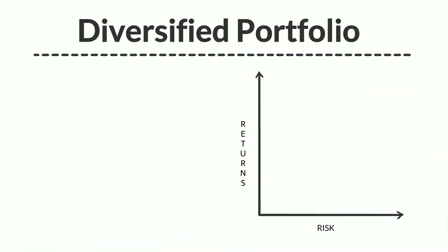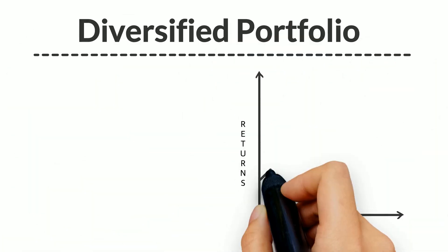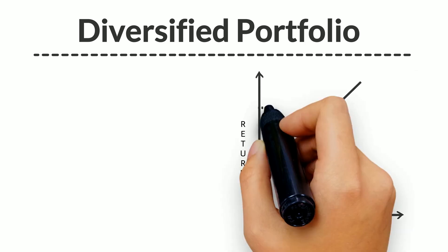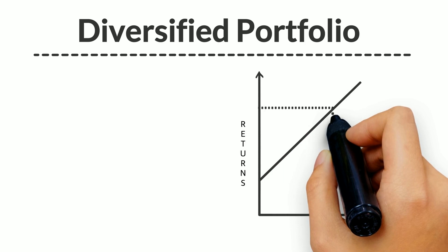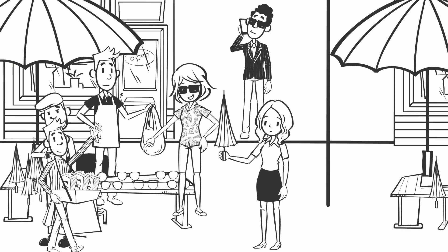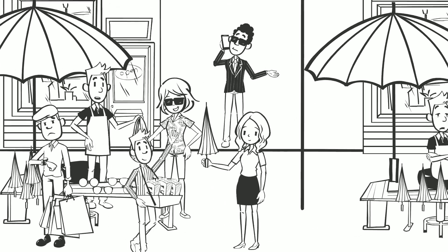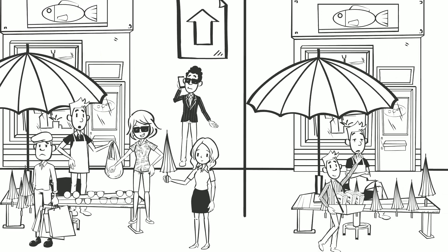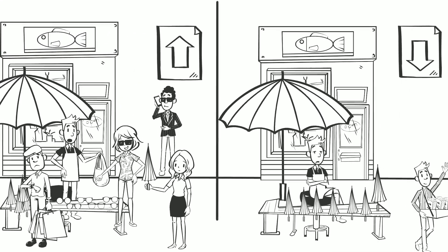However, the second graph is that of a well-diversified portfolio. The incline of the line changes. In this case, the fund manager would be expected to encounter a lesser degree of risk while accruing the same degree of return as earlier. That is, if the street vendor sells both types of products, his source of income diversifies, thereby reducing the overall risk.